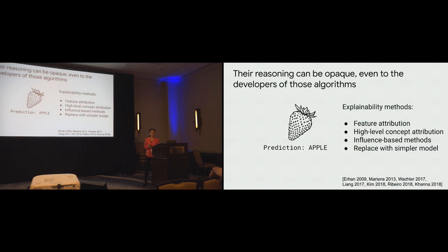As a result, there's been a wide range of explainability methods trying to increase the transparency of such algorithms. These range from feature attribution methods, which for instance point out which part of an image was most influential to the prediction, to higher level concept attribution methods, which for instance might explicitly say that it was the shape of the strawberry that made it look like an apple.